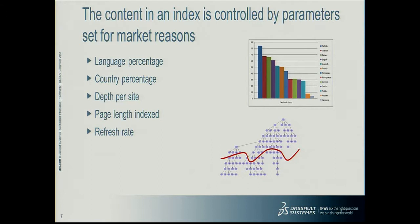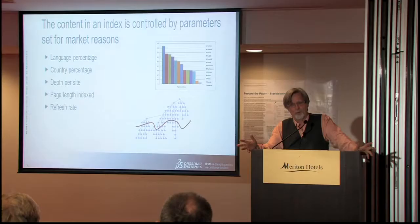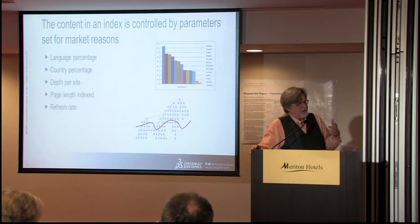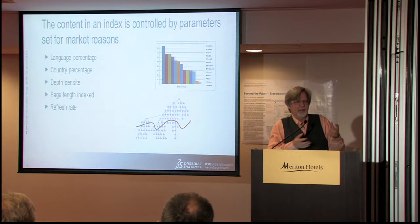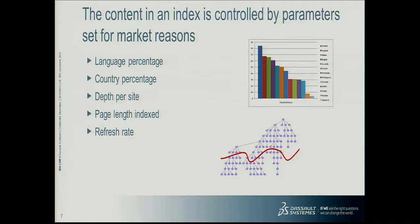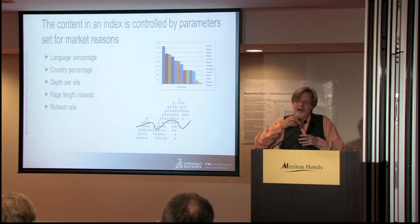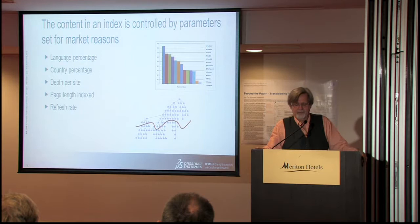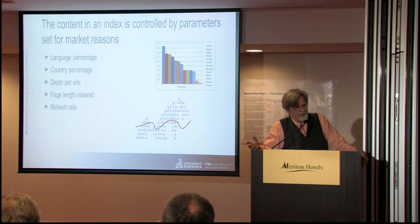Another important thing to understand: the content in an index is not the web. Google does not index the entire web — as we saw, there are 950 billion pages missing. Each company decides what they want in it. For example, Baidu in China will have many more Chinese pages than English pages, though there are still billions of English pages. In Exalead's index there are predominantly French and English pages, then hundreds of millions of pages in other languages. You can also decide what country you want to index — of course there's not a one-to-one correspondence between countries and languages.